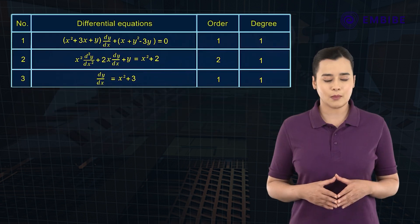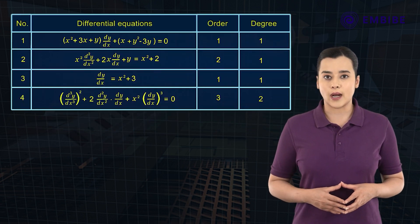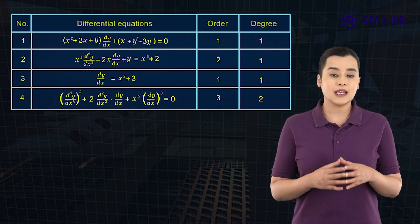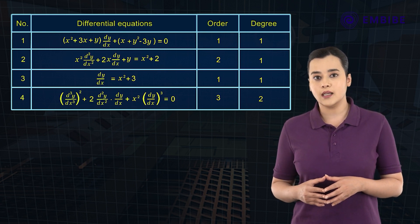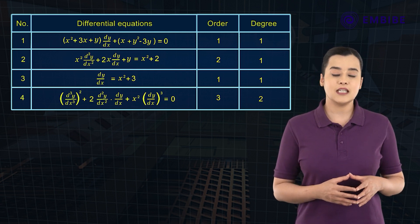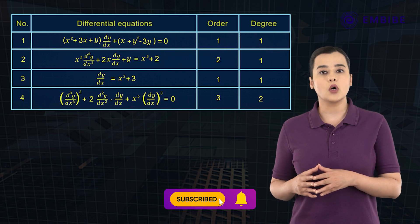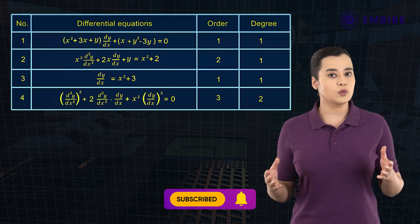Number 4: [(d³y/dx³)²]x² + 2(d²y/dx²)(dy/dx) + x²(dy/dx)³ = 0. Here the order is equal to 3 and the degree is equal to 2.